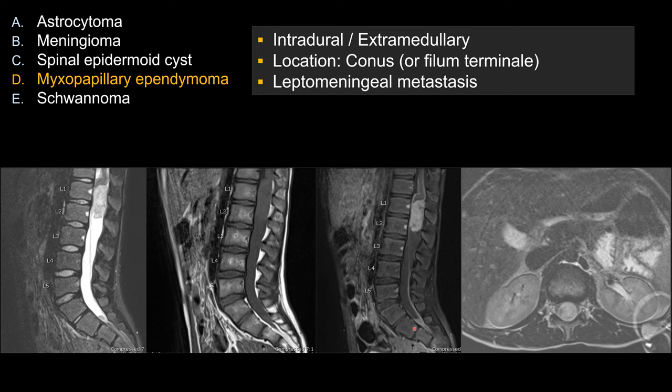The fact that you do see leptomeningeal metastasis — for example, you can see one in the distal part of the thecal sac, as well as coating around the conus — should not deter you from making the diagnosis. In fact, among the choices, myxopapillary ependymoma is the one that likes to metastasize, and some reports suggest up to almost 40% of them would have CSF dissemination. It is also more aggressive in younger patients and the pediatric population. Overall, the best choice here is myxopapillary ependymoma.